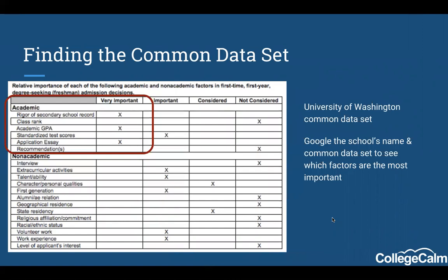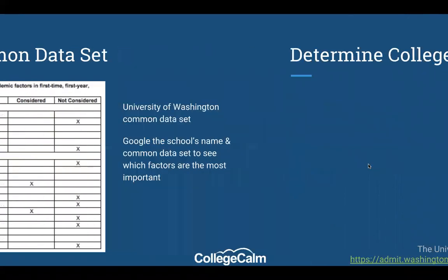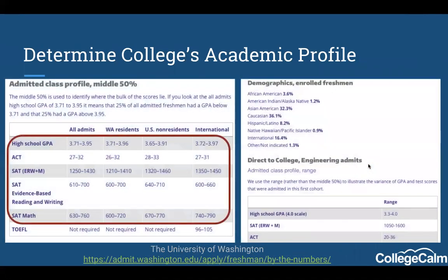Looking at the University of Washington's Common Data Set, you can see this is where Big Future gets its information — rigor of secondary school record, academic GPA, and the application essay are listed as very important. Interestingly, test scores fall into the 'important' category rather than 'very important,' which may reflect a difference between years. Beyond the Common Data Set, you can also look on the college's own website for their academic profile, where they typically post their freshman admission profile with average GPA, test scores, and application priorities.